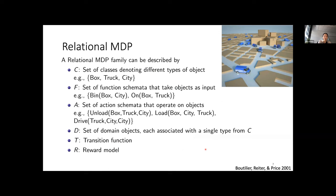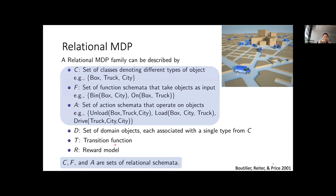One example is the relational MDP. A relational MDP family can be described by a set of classes denoting different types of objects, a set of function schemata that take those objects as inputs — these can be transformations to objects or actions — and specifically a set of action schemata that operate on objects. For a specific domain, we have a set of domain objects, each from a specific class from C, plus our standard transition function and reward model. This is a slight modification of the standard MDP definition that accounts for common factors across domains.